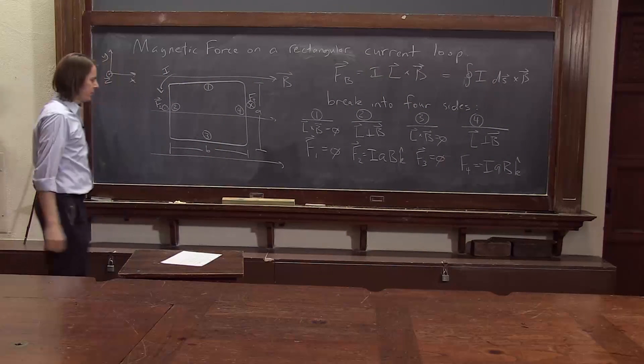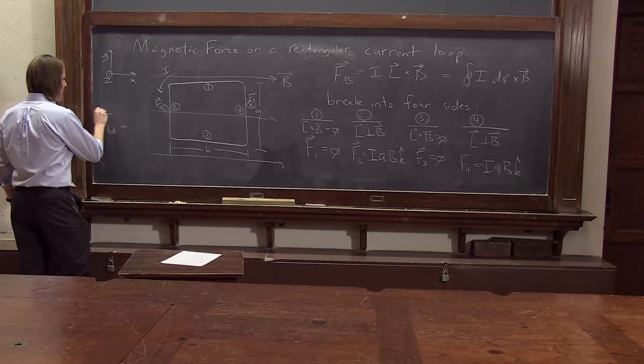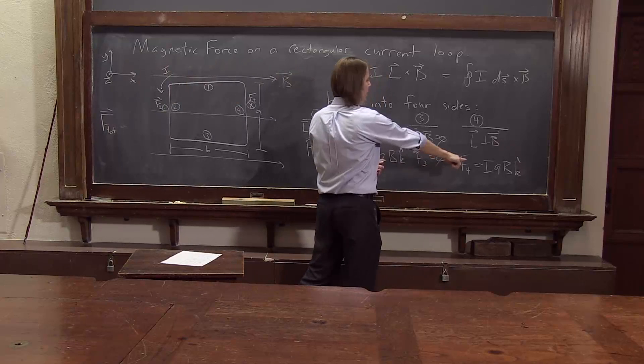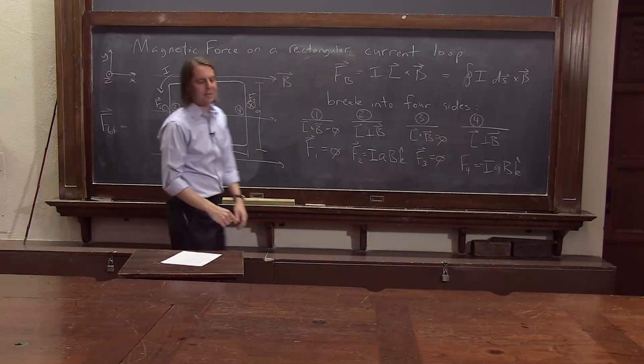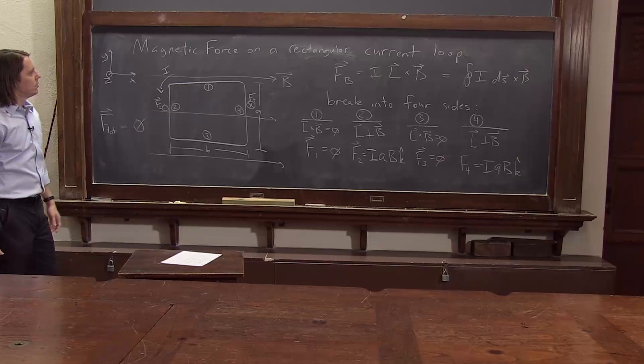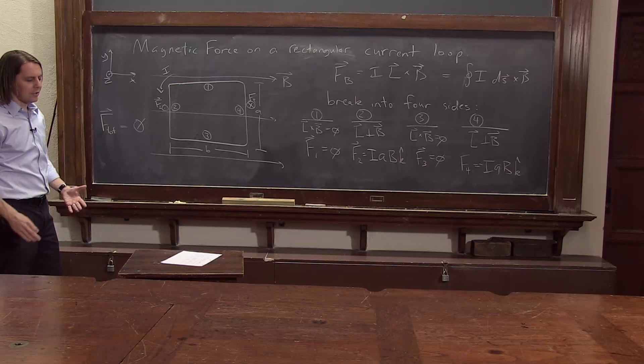So there we have all of our forces. And if we want the total force on the loop, it's equal to zero plus zero is zero plus, oh my gosh, those are the opposite. I A B minus I A B, so it's zero. So if you have a current loop in a uniform magnetic field, we get no force.